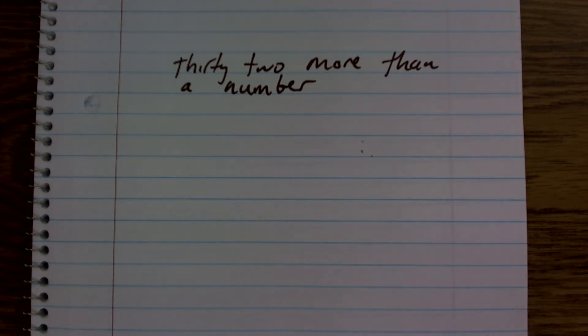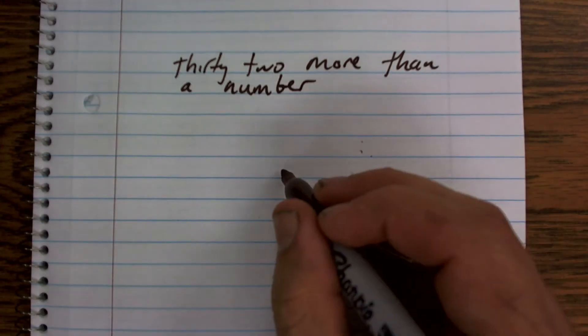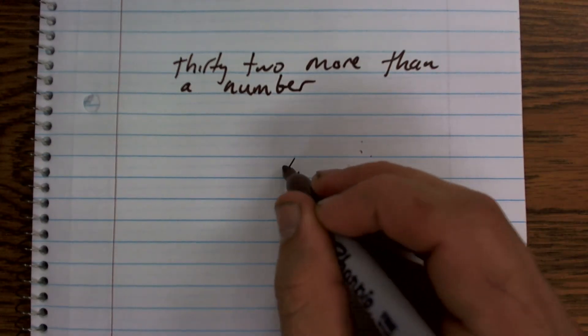Now I still don't know what my number is, so I'm going to represent that with a variable. And let's use the variable t for this one.